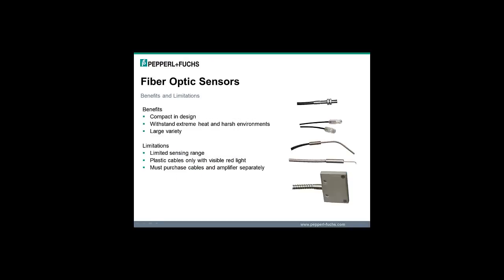Benefits of fiber-optic sensors are that they are compact in design and perfect for applications where conventional sensors don't fit, they can withstand extreme heat and harsh environments, and there is a large variety of different sensing heads available. Limitations are that fiber-optic sensors have a limited sensing range, plastic fiber-optic cables work best only with visible red light, and you must purchase fiber-optic cables and amplifiers separately.